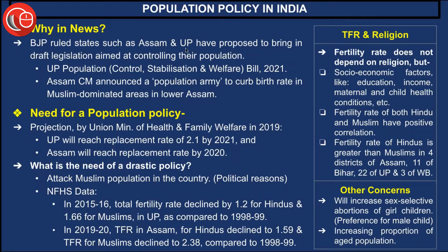Recently, the BJP-ruled states of Assam and Uttar Pradesh — and for UP we have already discussed this in previous sessions — have proposed draft legislation aimed at controlling their population. For Uttar Pradesh it was the Uttar Pradesh Population Control, Stabilisation and Welfare Bill 2021. Recently, the Assam Chief Minister announced a population policy to curb the birth rate in Muslim-dominated areas in lower Assam. A key concern is: when we are trying to reduce population growth nationally, why specifically target or exercise greater control over one particular religion? This raises serious questions about the intent of the policy.